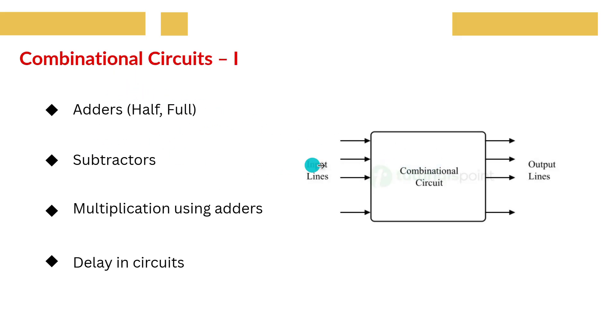Let us understand combinational circuits. Combinational circuits are circuits whose output depends only on the current input. Adders, subtractors, multiplexers, decoders, and so on. These are heavily used in CPUs.